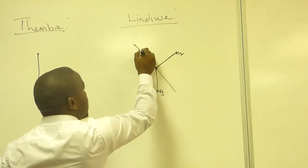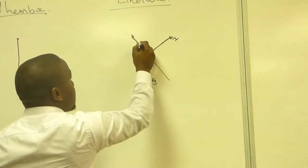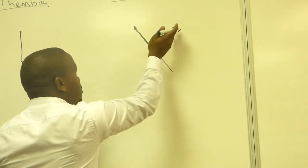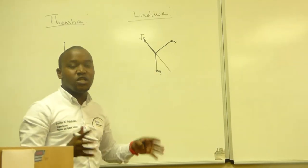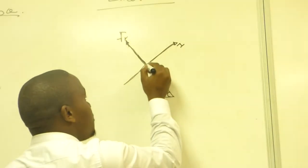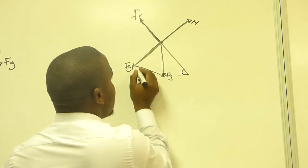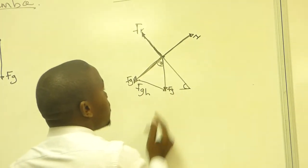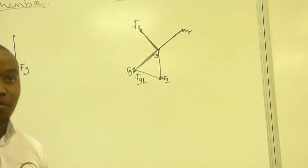So we have the free body diagram with the force of gravity acting on Lin Duwe, the normal force acting on Lin Duwe, and the frictional force acting on Lin Duwe. I'm giving theta there so I can dissociate gravity into its components — FgV (vertical) and FgH or Fg parallel. So you can draw it like that when you dissociate gravity into its components.